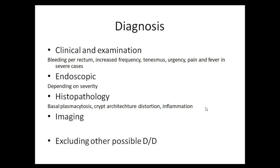If pneumoperitoneum is present, there is no role for medical management — the patient must be taken immediately for surgery. The next most important imaging is either CT abdomen or MR enterography. CT abdomen is most commonly used as it is easily available and can be reported even by a general surgeon. CT abdomen shows bowel wall thickening, distension, edema, pericolonic fat stranding, and the extent of colonic involvement. Post-contrast, mucosal enhancement indicates active inflammation.